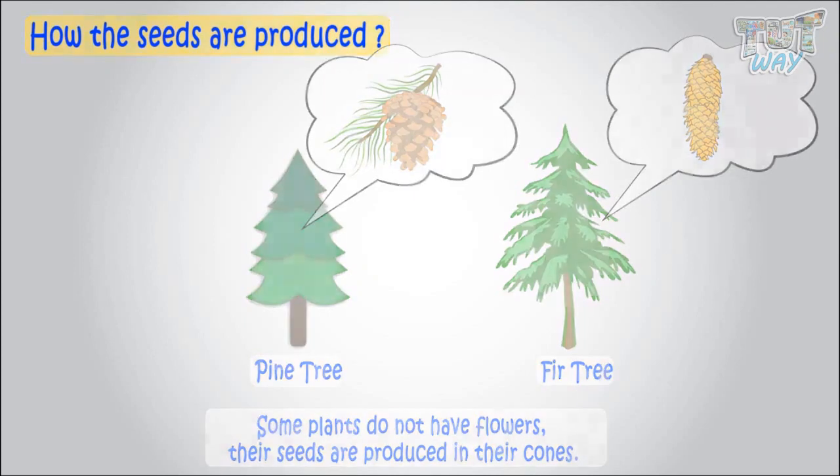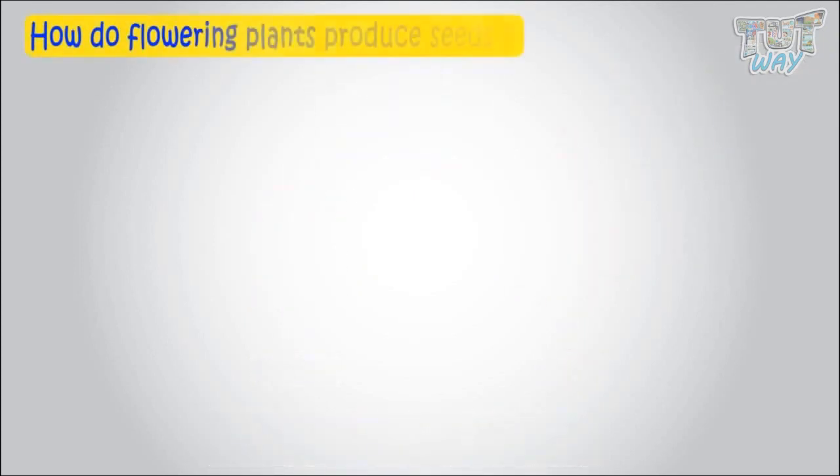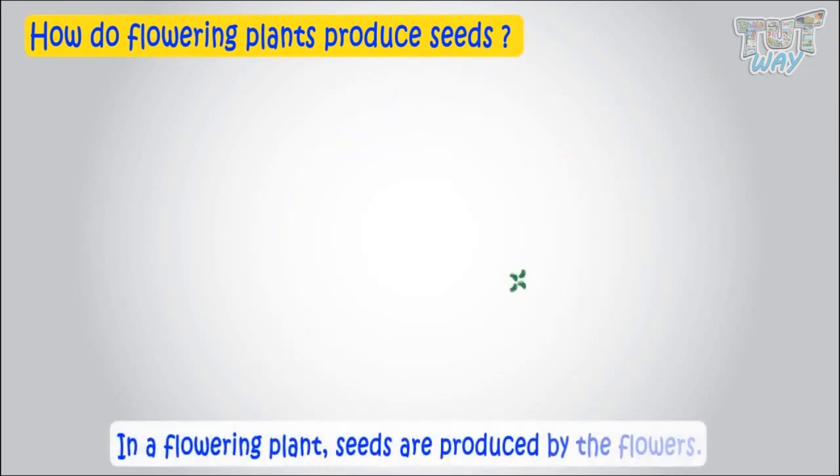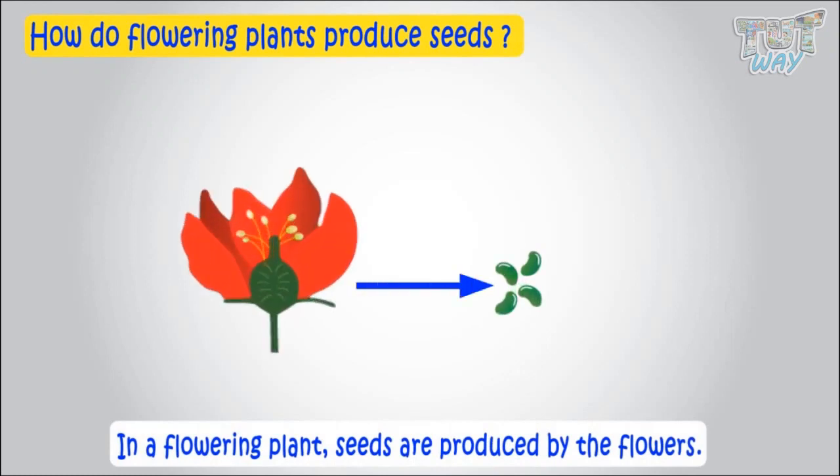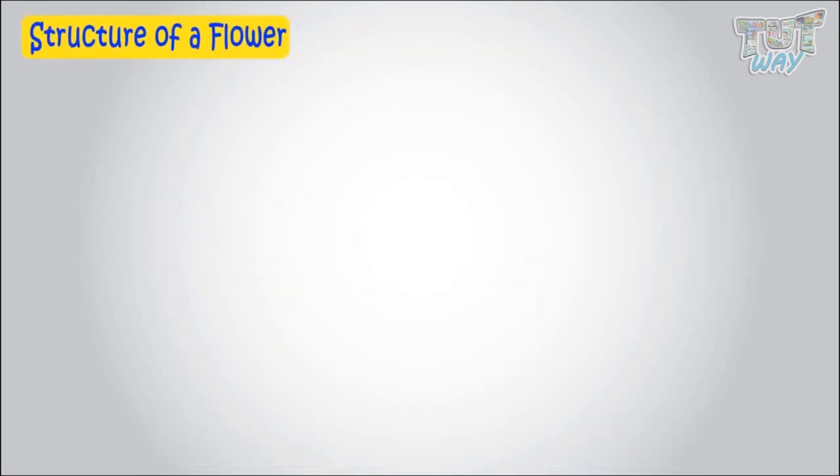Now, we will learn how do flowering plants produce seeds. In a flowering plant, seeds are produced by the flowers. So today, we will first learn the structure of a flower and then we will learn how seeds are produced by a flower.